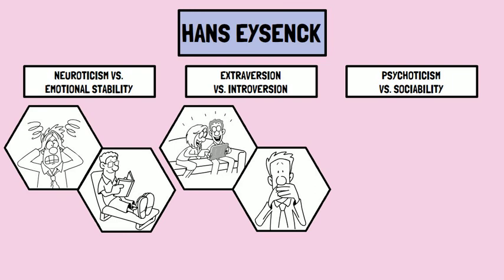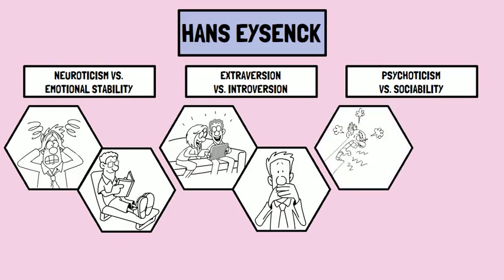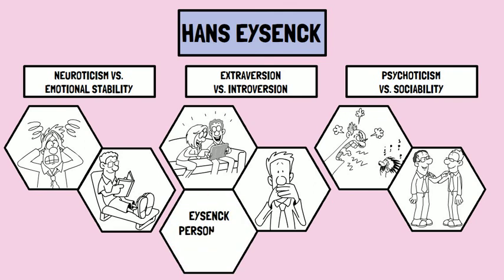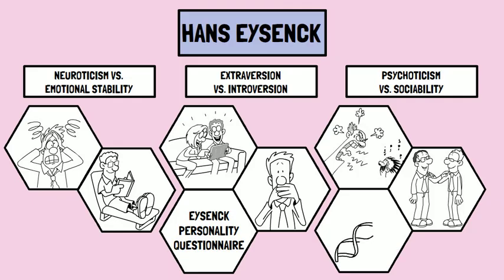The third dimension is Psychoticism vs. Sociability. It is considered that this dimension interacts with the other dimensions mentioned. A person who scores high on the psychoticism dimension tends to be hostile, egocentric, and antisocial. In contrast, people who are low in psychoticism are more likely to be emotionally stable and empathetic and have the ability to build healthy relationships. The Eysenck Personality Questionnaire is the test used to study these dimensions of personality. According to Eysenck, each of these dimensions is based on underlying biological and genetic factors, and they influence a person's behavior in numerous ways.